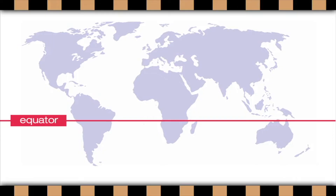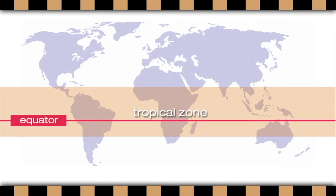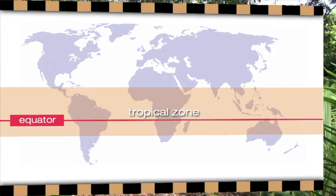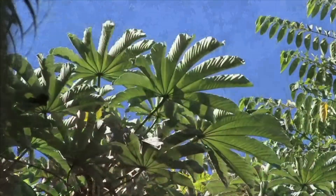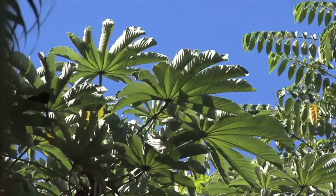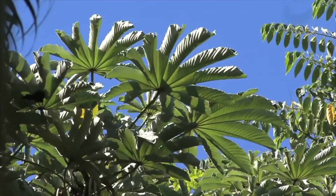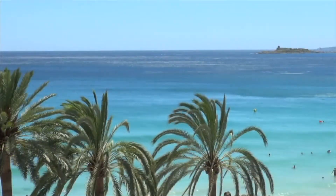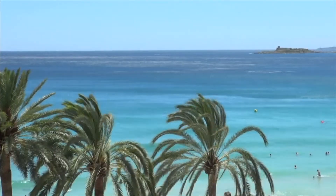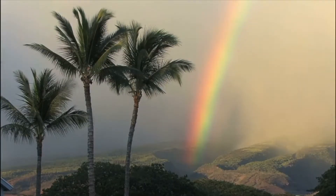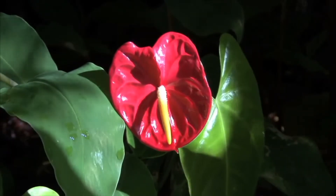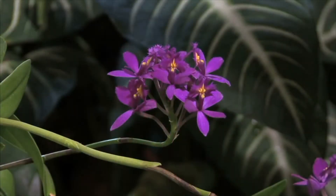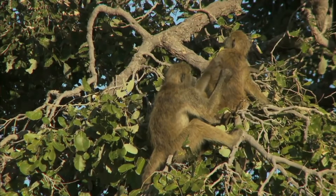A tropical climate is located just north and south of the equator, known as the tropical zone. The tropical zone is hot and doesn't have winter. Because of its location, tropical zones receive direct sunlight all year long. Regions of the world with a tropical climate have hot temperatures all year long. Many tropical areas have humid and wet environments. There are more species of plants found in tropical climates than anywhere else on Earth. There are also a wide variety of animals, both large and small, that live in a tropical climate.